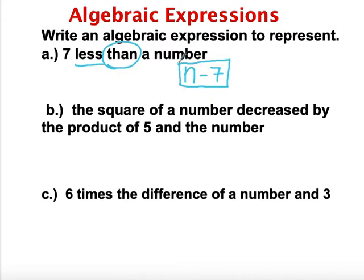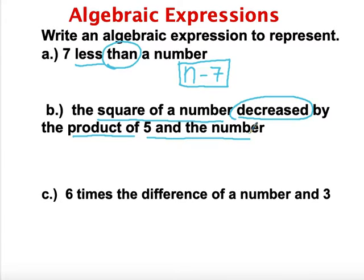Our second example says we're looking for the square of a number, and then we're going to decrease that by the product of 5 and a number. The square of a number looks like n squared — and I can use x, a, or y, but for now I'll let the number be n. So I have the square of a number decreased by — that tells me subtraction — the product of 5 and the number, giving me n squared minus 5n.